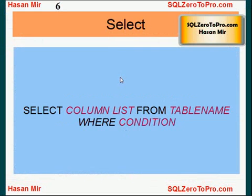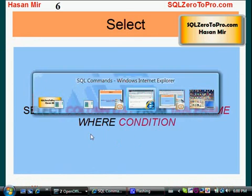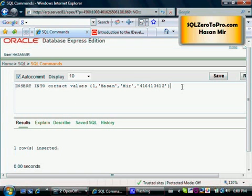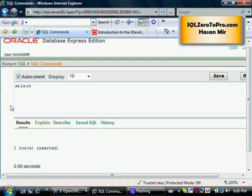Now next is the most common, most popular statement for SQL: the SELECT statement. The syntax is SELECT column list FROM table name, and optional is the WHERE condition. The WHERE clause is optional. Here I'm going to write a very simple SELECT statement without a WHERE clause. SELECT star means I want to select all the columns from the table name, which would be contact.